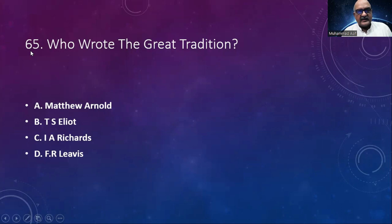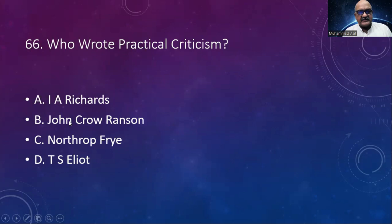Number 65: Who wrote The Great Tradition? Options: Matthew Arnold, T.S. Eliot, I.A. Richards, F.R. Leavis. The answer is F.R. Leavis. Number 66: Who wrote Practical Criticism? Options: I.A. Richards, John Crowe Ransom, Northrop Frye, T.S. Eliot. The answer is I.A. Richards.